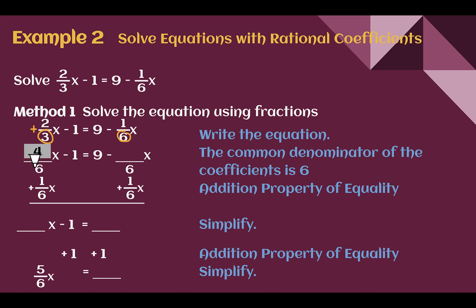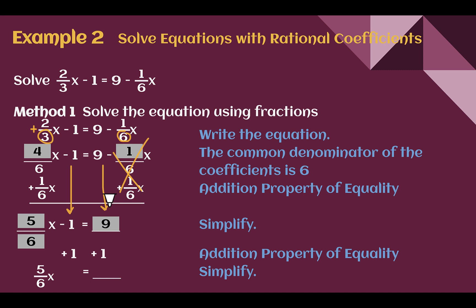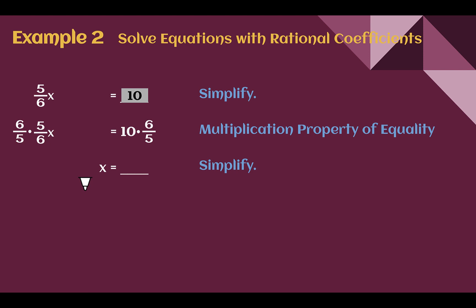Now I can use the addition property of equality. Adding 1/6x to both sides: negative 1/6 plus 1/6 gives zero. 4/6 plus 1/6 gives 5/6x. Bring down the minus 1; it still equals 9. Now I just have a two-step equation with a fraction. Add 1 to both sides: I get 5/6x equals 10. Then multiply by the reciprocal 6/5 — since 6/5 times 5/6 equals 1, I multiply the other side by 6/5 as well. 10 times 6/5: 10 times 6 is 60, divided by 5 is 12. So x equals 12.